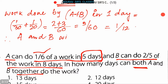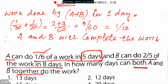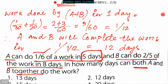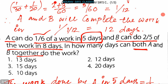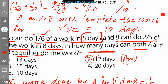So A and B will complete the work in 1 divided by (1/12), that is equals to 12 days. The question was in how many days can both A and B together do the work — the answer is 12 days, that is option 2.